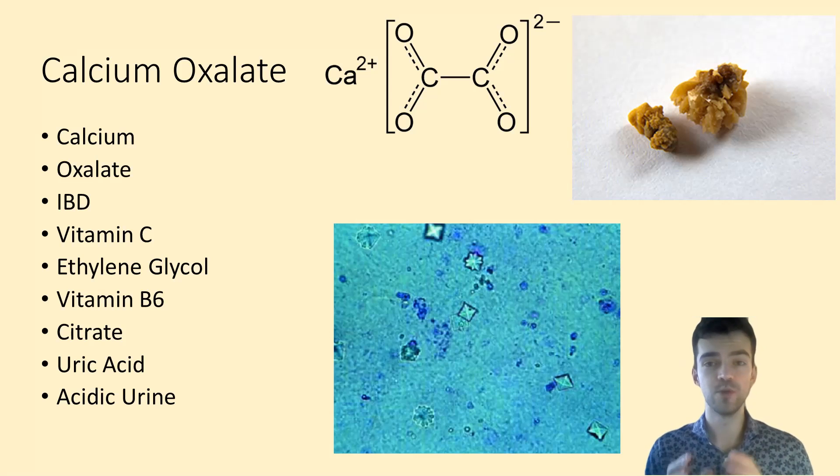In irritable bowel disease like Crohn's and ulcerative colitis, the gut wall becomes very leaky with inflammation, and oxalate likes to sneak through those spaces. Now you have way too much oxalate in your bloodstream. The kidney tries to get rid of that oxalate by pumping it into the kidney tubules, where it binds to calcium and forms a stone.